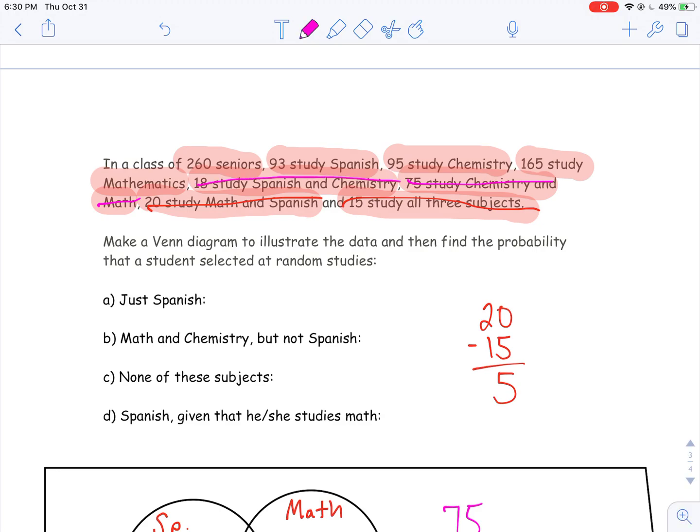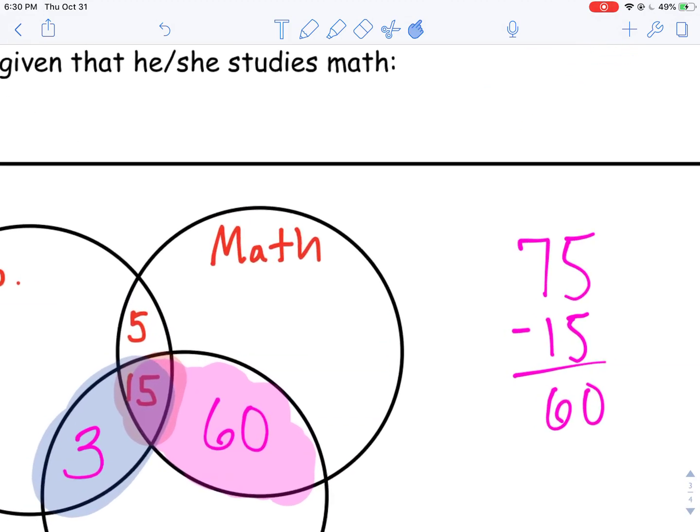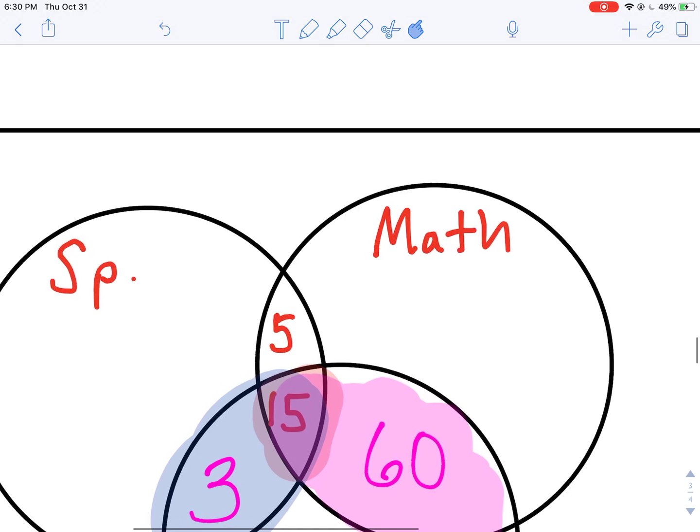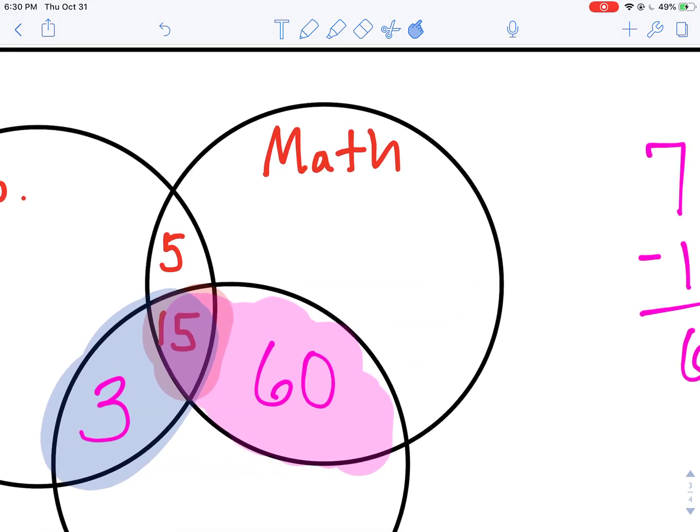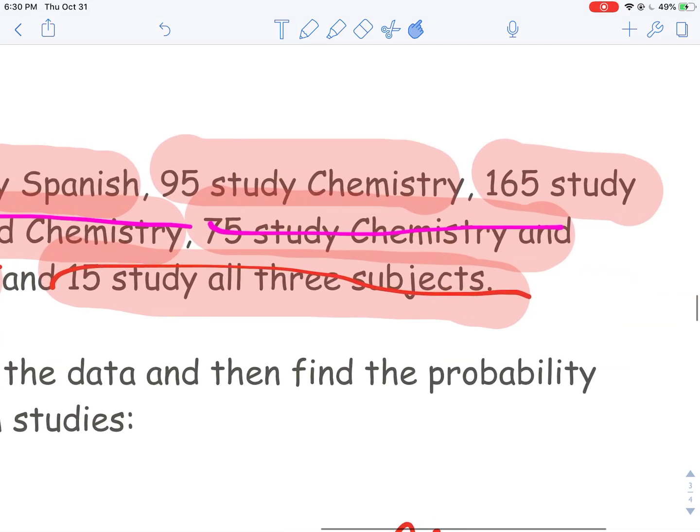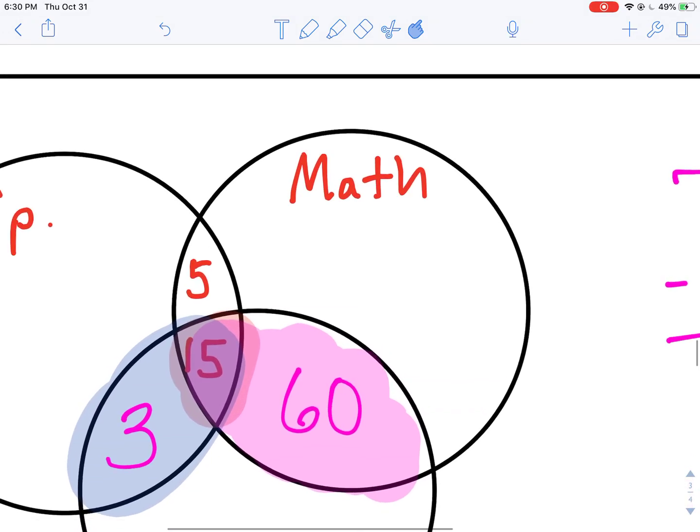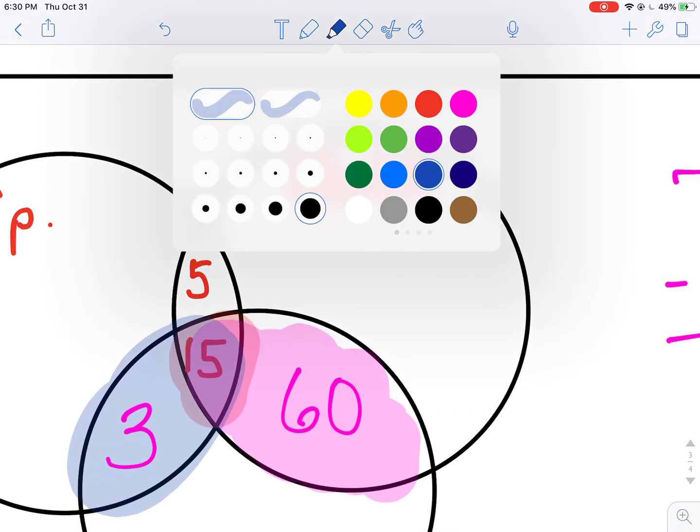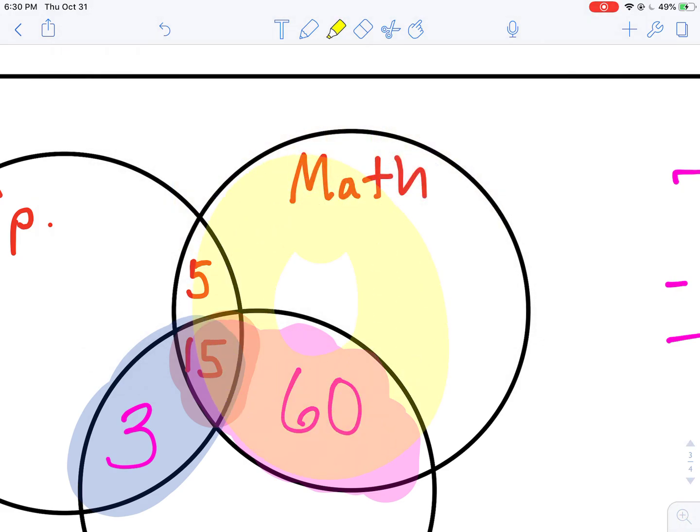Now I have 165 who study Mathematics. So I'm going to look at Mathematics here. That means within this whole circle of Mathematics, I should be getting 165. The key is, I've already got people in this circle. I've got the 60 who study Math and Chemistry, the 15 who study all three, and the 5 who study Spanish and Math.